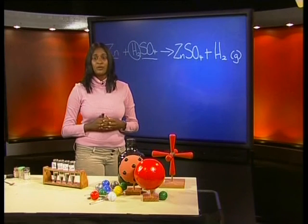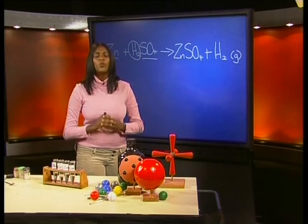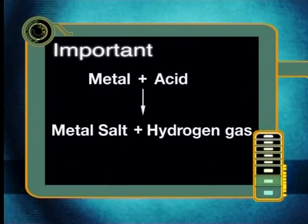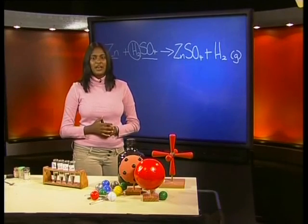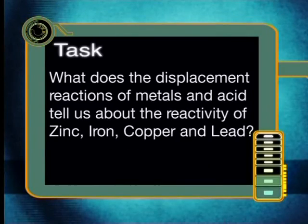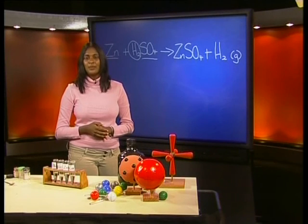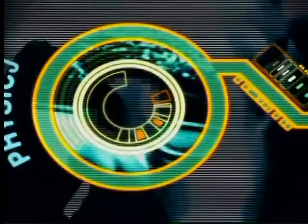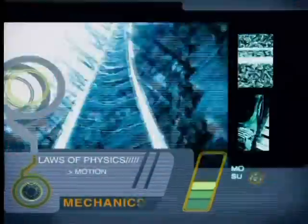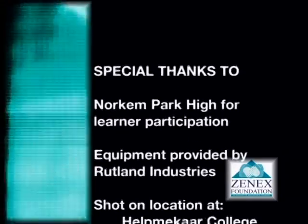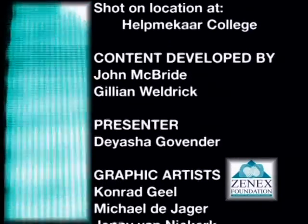It is important that you remember the reaction pattern that we have discovered today. Here it is one more time: metals react with acids to form metal salts and hydrogen gas. Before I leave you, I want you to think about this — what do the displacement reactions of metals and acid tell us about the reactivity of zinc, iron, copper and lead? I'm sure that you enjoyed today's lesson. See you next time when we will continue to talk about displacement reactions. Bye!